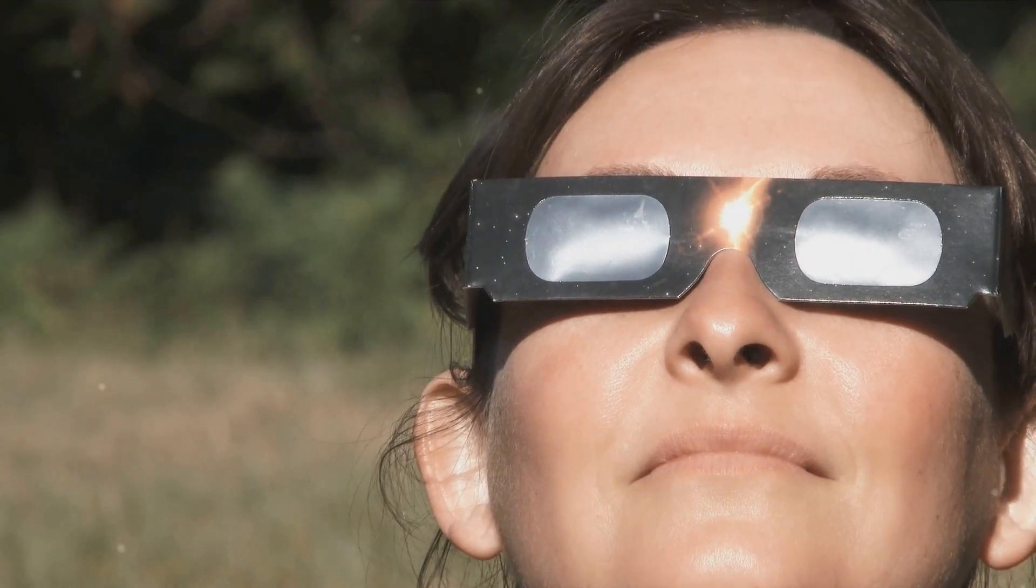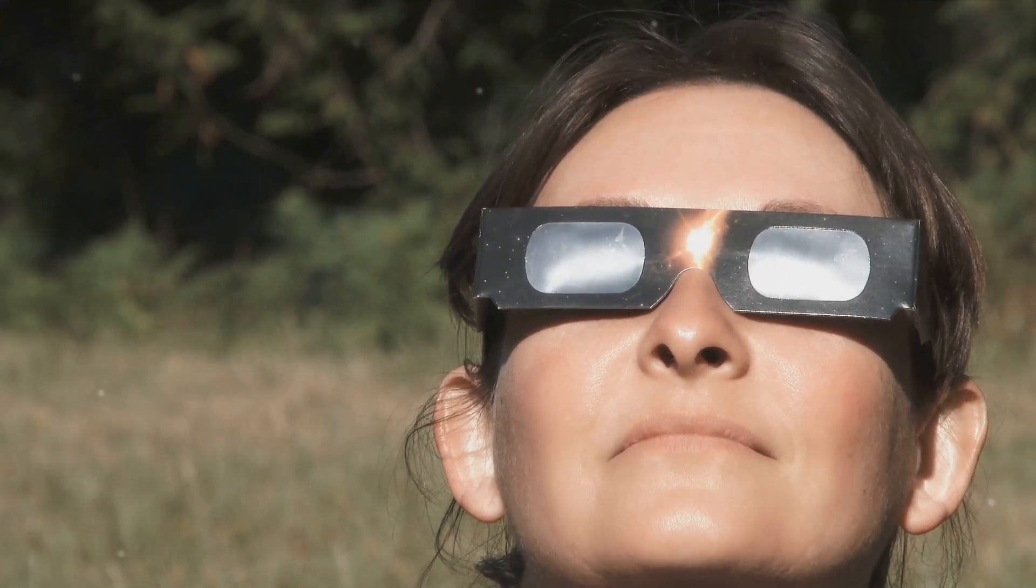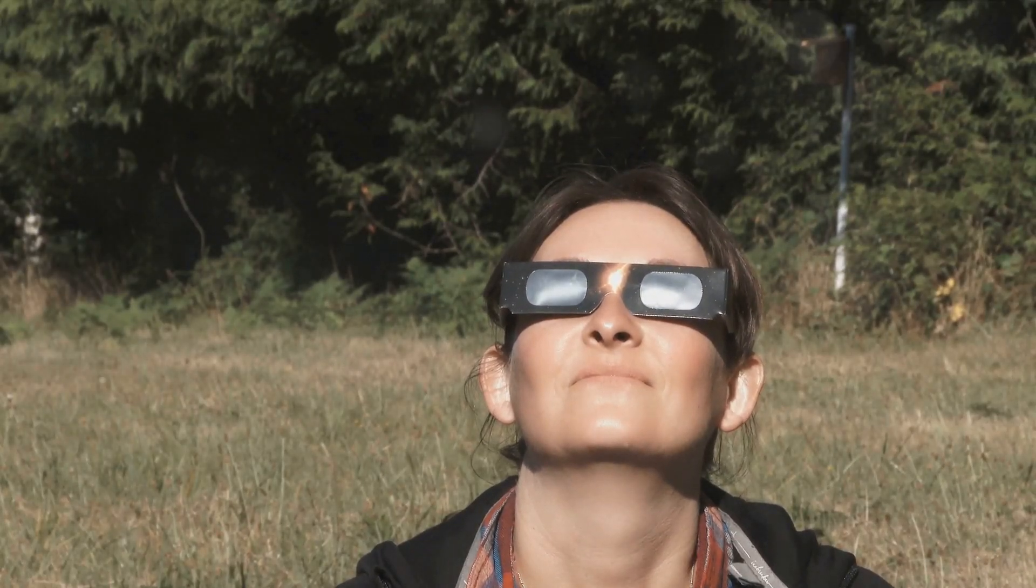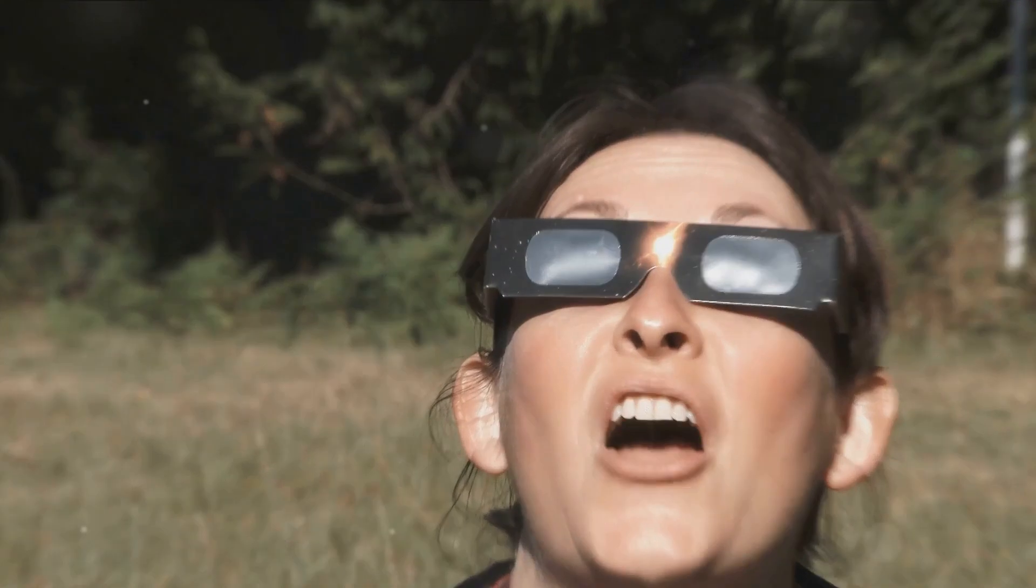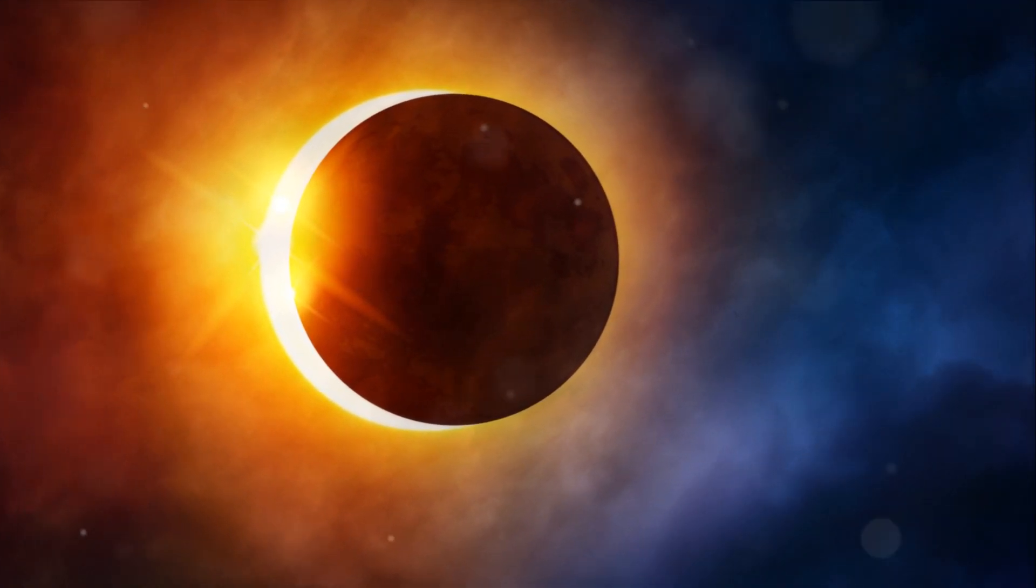The celestial stage is set and the path of totality for the solar eclipse stretches from Mexico to northeastern Canada, making it the most populated eclipse in US history. This means you've got a wide range of locations to choose from. However, some spots do offer a better view than others.